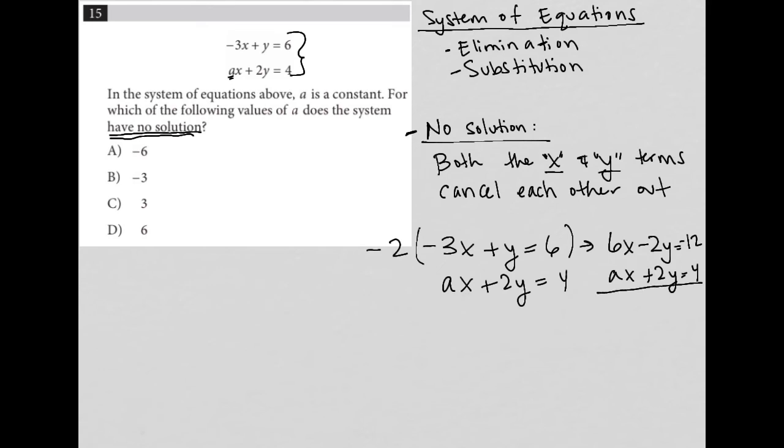Now, when I went to do this, the whole purpose would be that I can cross out the Y values, right? But what the question is telling me is that I have no solution, which means this A value must be negative 6, right? A has to be negative 6, because if A were negative 6,